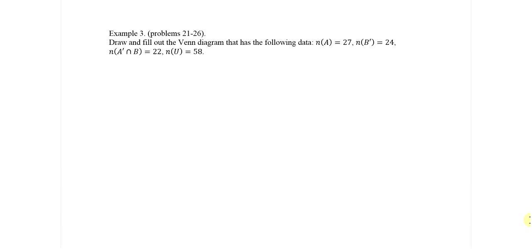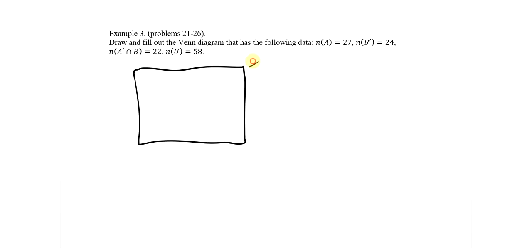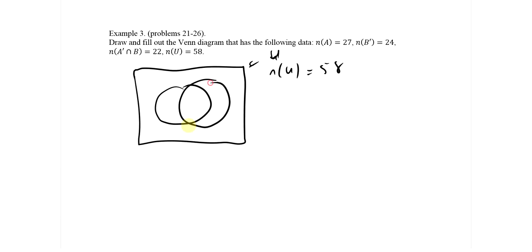Here's a more complicated symbolic Venn diagram problem (problems 21–26). N of U = 58, N of A = 27, N of B prime = 24, N of A prime intersection B = 22. Sometimes it's easier to give each region a letter: call the center X (A intersection B), the A-only region Y (A intersection B prime), the B-only region Z (A prime intersection B), and the outside R (A prime intersection B prime).